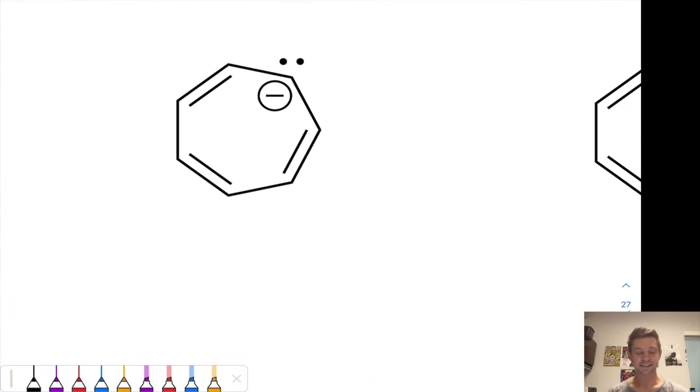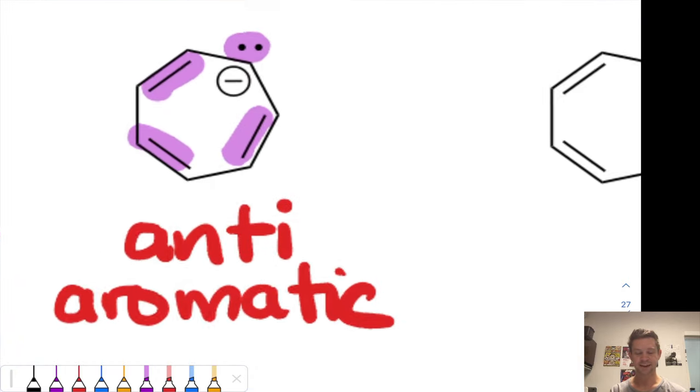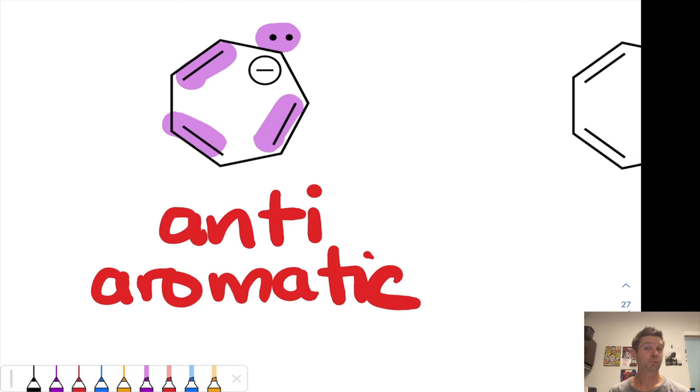The second molecule here is the cycloheptatrienal anion. It is cyclic, fully conjugated. Keep in mind there's an additional implicit hydrogen at this anionic carbon, so that carbon has sp2 hybridization. That sp2 hybridization ensures that this lone pair can engage in conjugation and be counted as part of the pi system. So that lone pair is in the pi system, and we have 2, 4, 6, 8 electrons. Is that a Huckel number, a 4n+2 number? No. It's a 4n number with n equal to 2. This molecule is anti-aromatic and especially unstable.